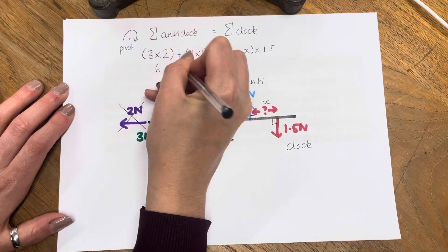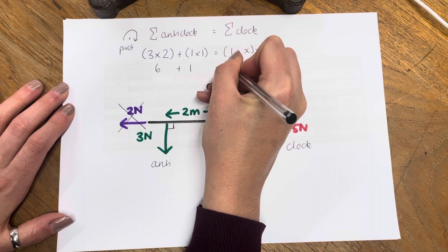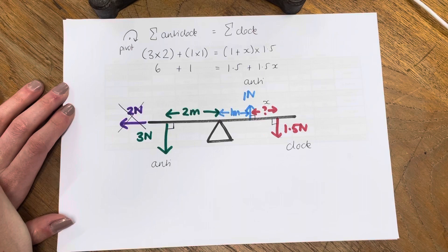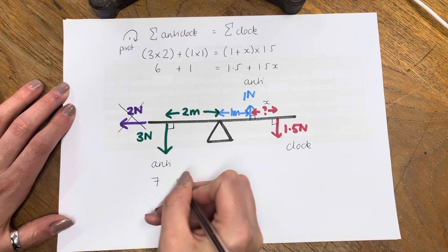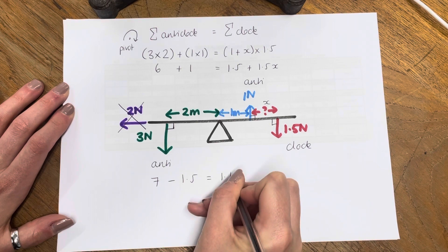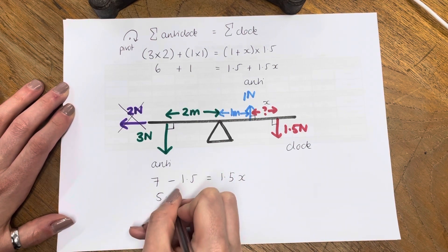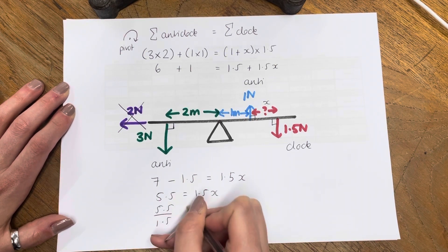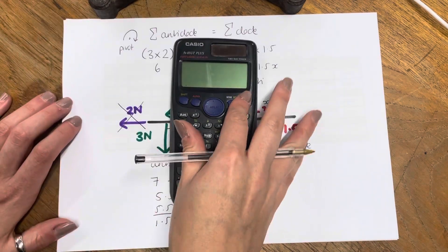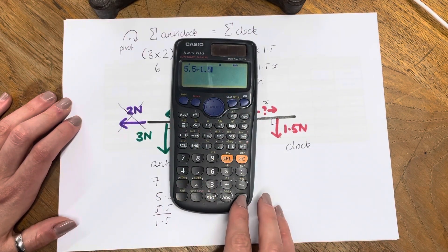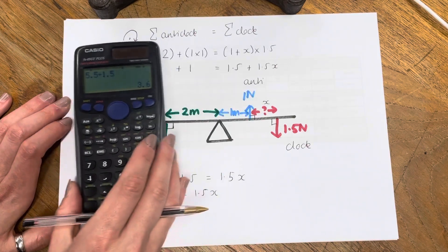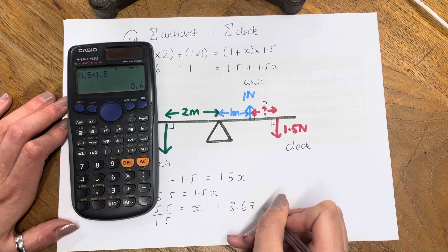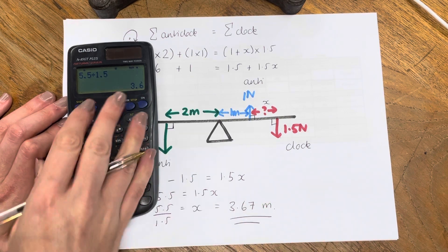So 3 times 2 is 6, plus 1, equals 1.5 plus 1.5X — I've just expanded that bracket. Moving down: 7 minus 1.5 equals 1.5X. 7 minus 1.5 is 5.5 equals 1.5X. 5.5 divided by 1.5 — I'm going to use the calculator, because I've made these problems up and not checked them — equals 3.6 recurring. So I'm going to round that to 3.67 metres. And there is my answer.